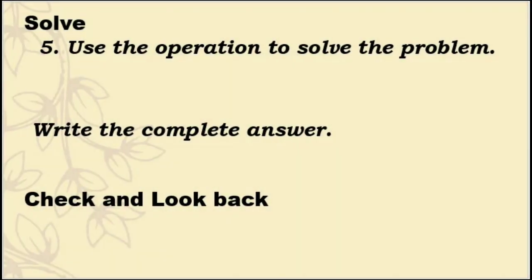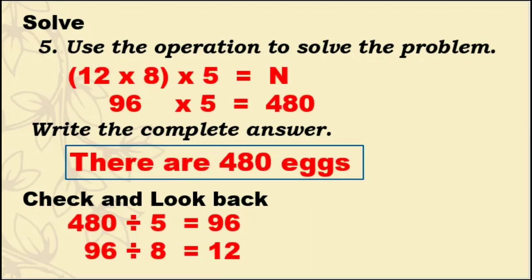Ngayon ay gamitin na natin ang operation to solve the problem. 12 times 8 is 96, times 5 is 480. So, there are 480 eggs. I-check mo kung tama ang iyong sagot. 480 eggs divided by 5 days equals 96. 96 divided by 8 dozens equals 12.